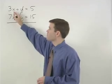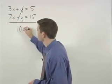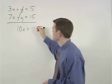On the left, 3x plus 7x is 10x, and on the right, 5 plus 15 is 20.